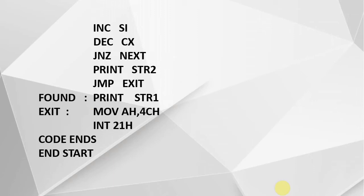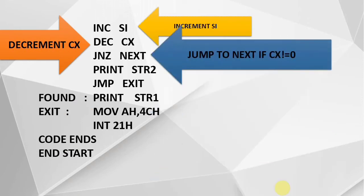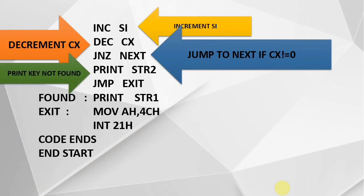If the elements are not equal, the program moves on to the next element by incrementing SI, then decrements CX. If CX is not zero, it jumps back to compare the next element. This loop continues until CX becomes 0. If the count reaches 0 with no match, STR2 ('key not found') is printed.